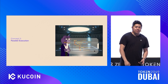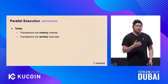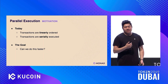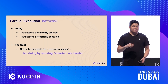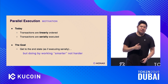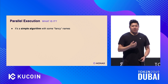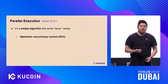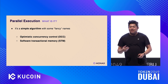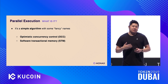The second thing to talk about is parallel execution. In Ethereum, transactions are linearly ordered and serially executed in most systems. The goal is to still have transactions be linearly ordered, but do something smarter to reach the same end state as serial execution while being more efficient. Parallel execution is actually a very simple algorithm — there are fancy names like optimistic concurrency control or software transactional memory, but the actual algorithm is just the intuitive thing.